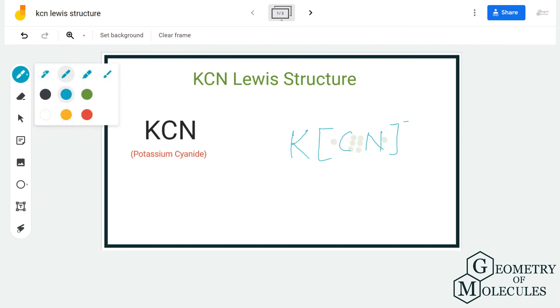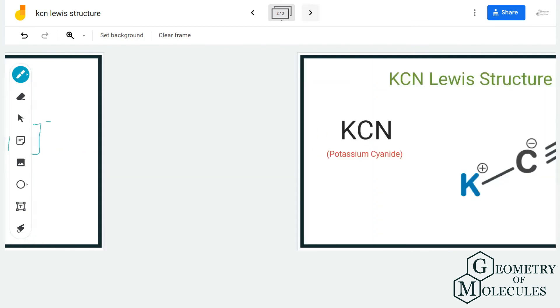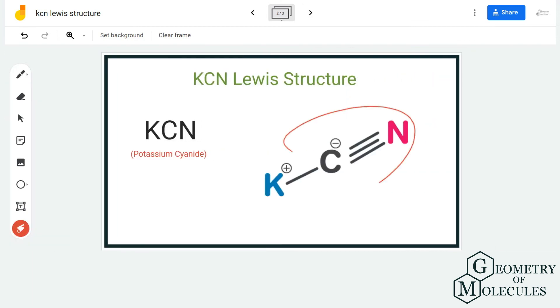The cyanide ion already has a negative charge on it. So this is how you can write the Lewis structure of KCN. We often also place brackets around the ions because there is formation of ions in these molecules. This is the Lewis structure of KCN.